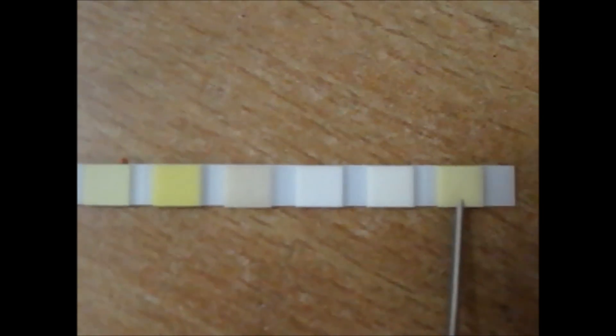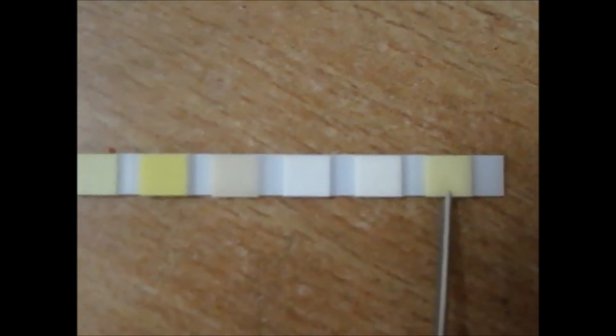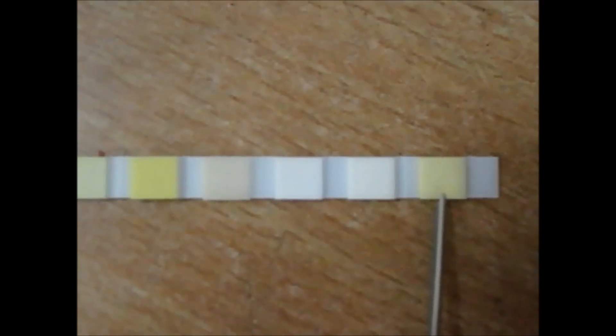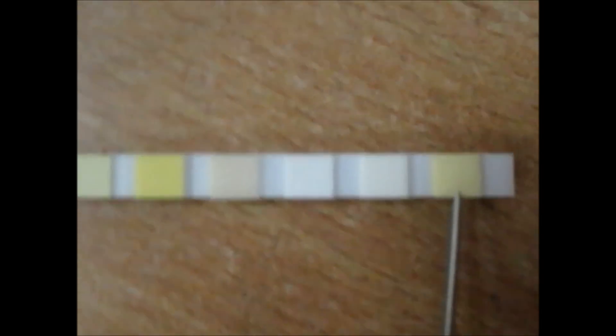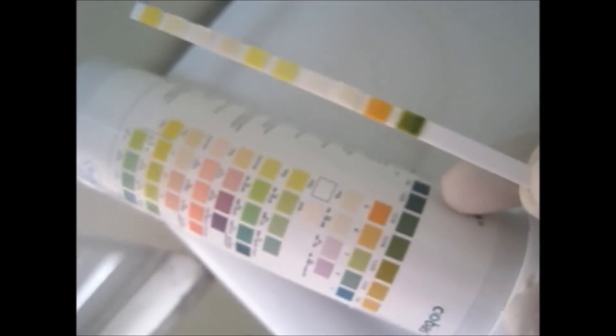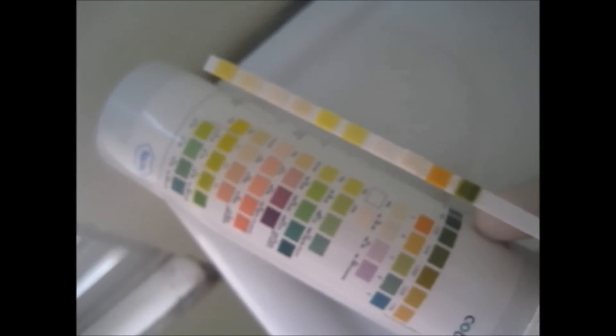It tells about the bilirubin in the urine, and the next one tells you about two things: the presence of blood in the urine or hemoglobin. Each color indicates the concentration of that particular value, which we will show you later in the video.